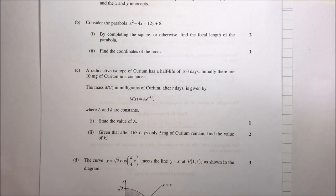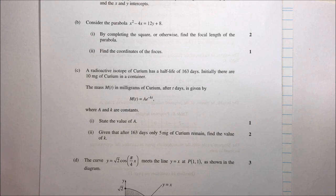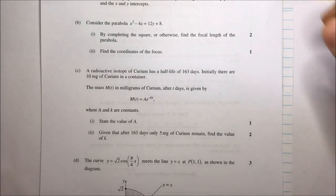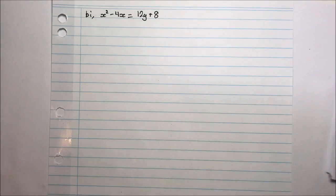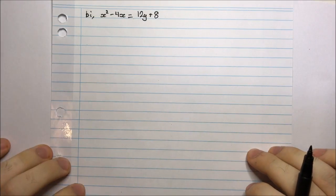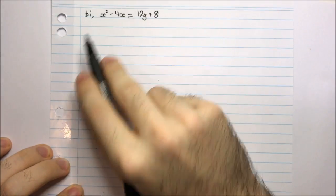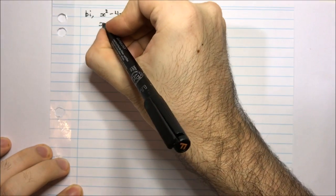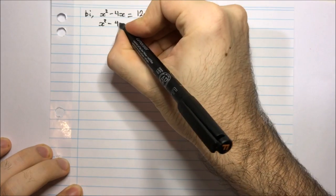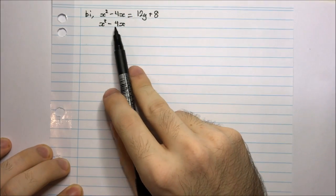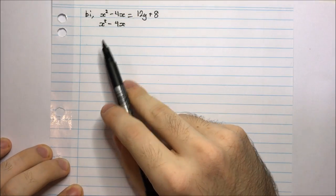Part b. Consider the parabola x squared minus 4x equals 12y plus 8. Part i: by completing the square or otherwise, find the focal length of the parabola. Here is my equation for the parabola. The question says to complete the square, so I'll complete the square on x. To do that, I half the coefficient of x — that'll be negative 2 — and then I square it, giving positive 4. So I add positive 4.